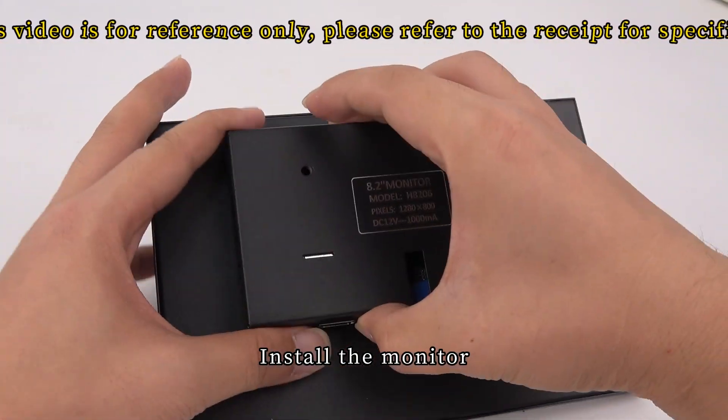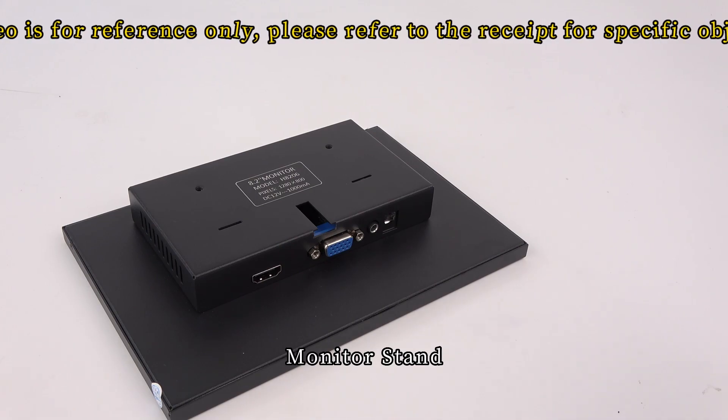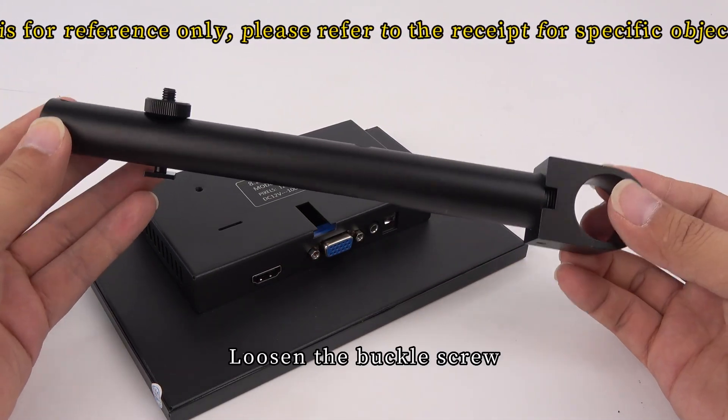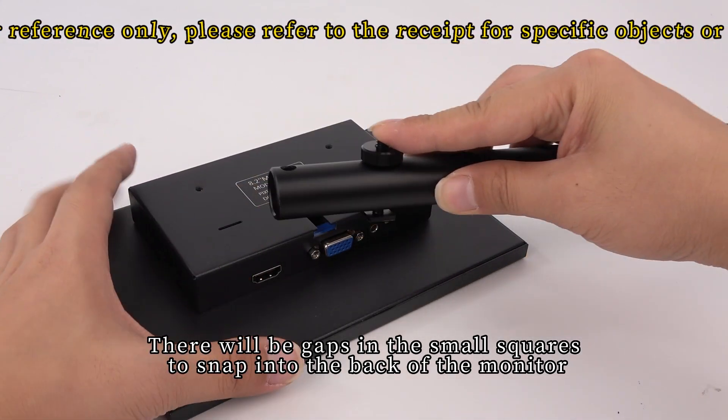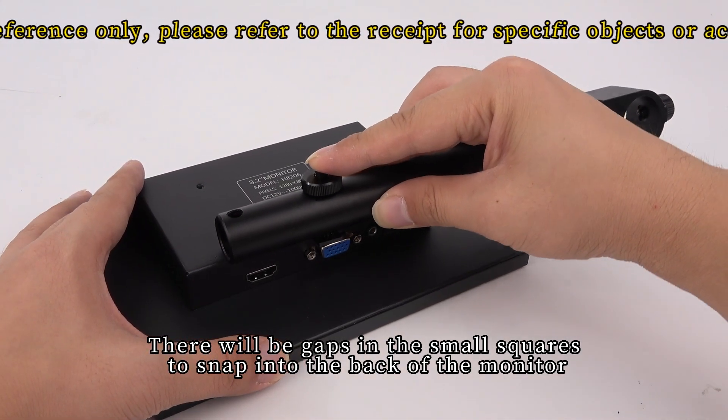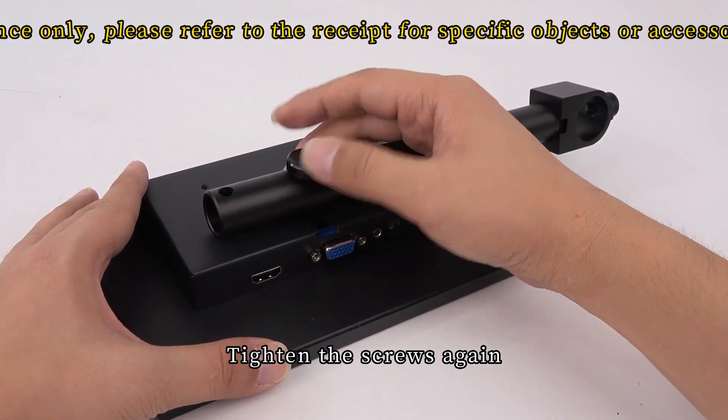Install the monitor on the monitor stand. Loosen the buckle screw. There will be gaps in the small squares to snap into the back of the monitor. Tighten the screws again.